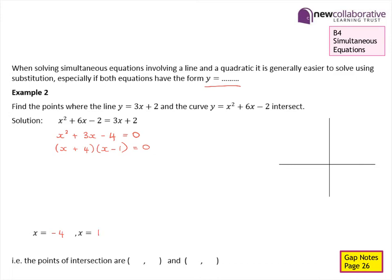We can substitute both values of x into either of the original equations — it's easier in this case to substitute into the linear equation. Substituting x equals negative 4 gives y equals negative 10, and substituting x equals 1 gives y equals 5. Therefore the points of intersection between the line and the curve are (negative 4, negative 10) and (1, 5).